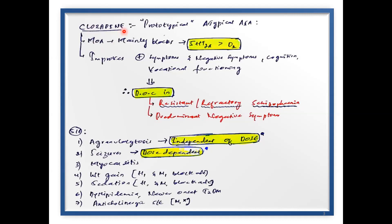The mechanism of action of Clozapine is mainly by blocking the 5-HT2A receptors more than the D2 receptor. That is why atypical antipsychotics are called atypical — they have higher affinity for 5-HT2 receptors compared to D2 receptors. This gives them a lesser potential to cause extrapyramidal symptoms and low chances of hyperprolactinemia. Clozapine improves positive symptoms by blocking D2 receptors on the mesolimbic pathway, and also improves negative symptoms, cognition impairment, and vocational functioning — by acting as an antagonist at the 5-HT2 receptor.